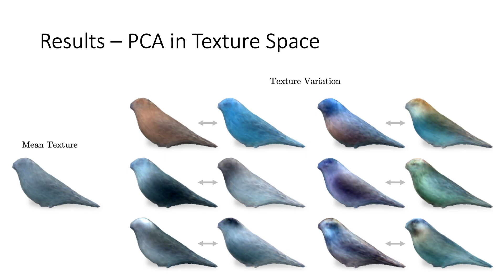Observe that our network learns to predict diverse texture and learns interesting modes of variation for neck, head, eyes, beak, belly, wings and back of the bird.